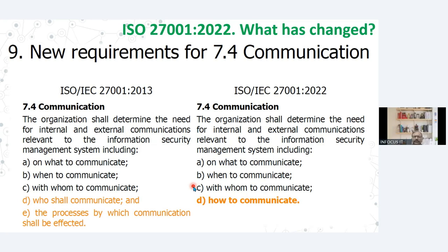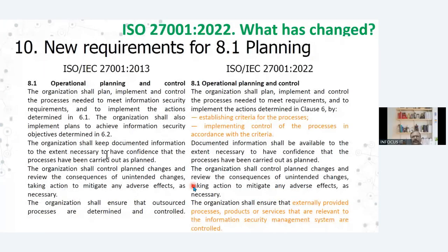In clause number 8.1, which is the operational clause, the additional lines that have been added are: establishing criteria for the processes, implementing control of the processes in accordance with the criteria, and the organization shall ensure that externally provided processes, products or services that are relevant to the ISMS are controlled. So these additional items are a kind of fine tuning to the current clauses.